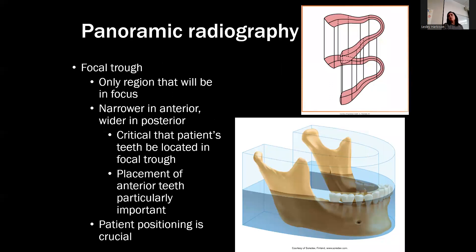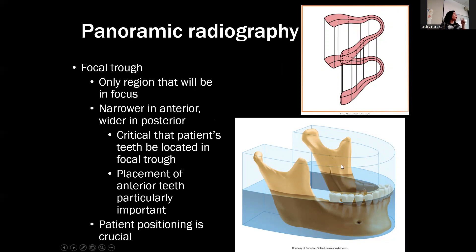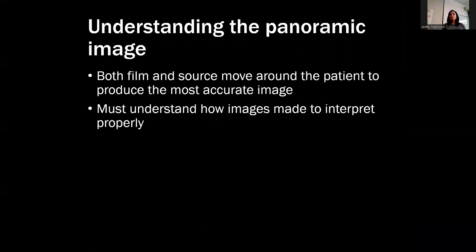It's a 3D horseshoe-shaped region called the focal trough or the image layer. The only area that's in focus is the focal trough, shaped like a horseshoe to fit the jaw. You have to position the patient in that area - if you're too far forward, too far back, or off to one side, you're going to get distortion. The focal trough is narrower at the anterior and wider at the posterior. Placement of anterior teeth is particularly important, and patient positioning is crucial.